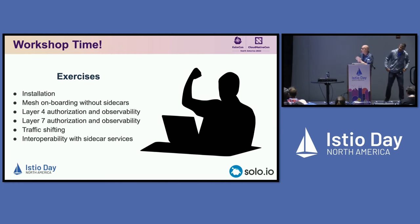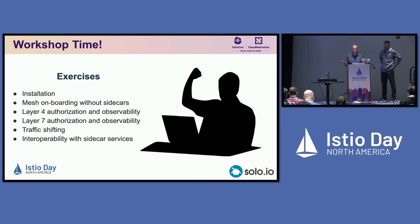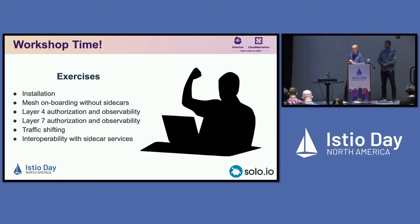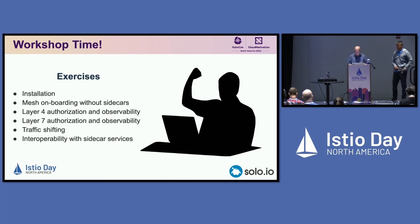So let's cover what we're going to do today. We'll do some basic Istio installation, onboard services to the mesh without sidecars, demonstrate layer 4 authorization and observability using the Z-Tunnel, then expand to layer 7 authorization and observability by adding a waypoint proxy. We'll do a brief traffic shifting example, time permitting, and finally show interoperability between ambient and sidecar-based services.